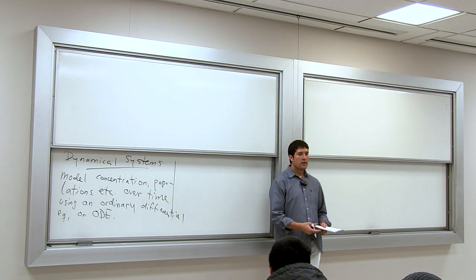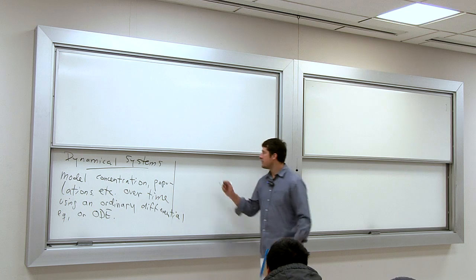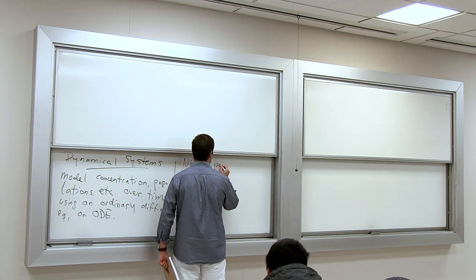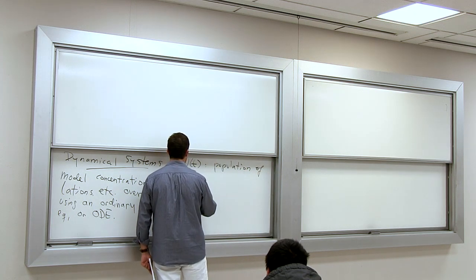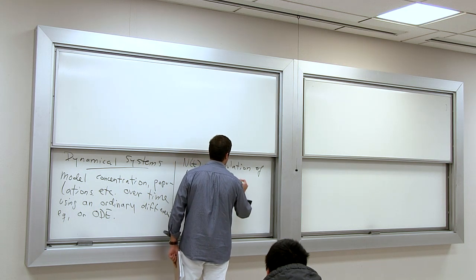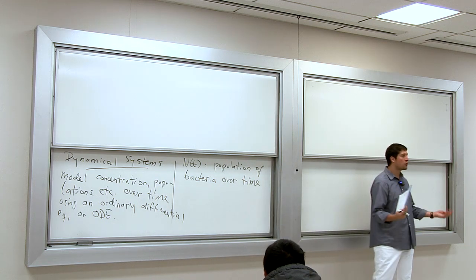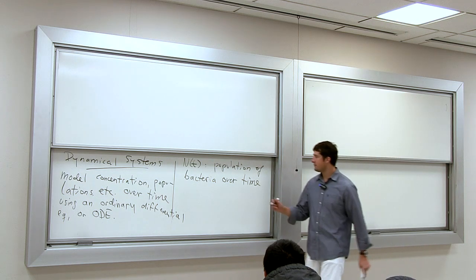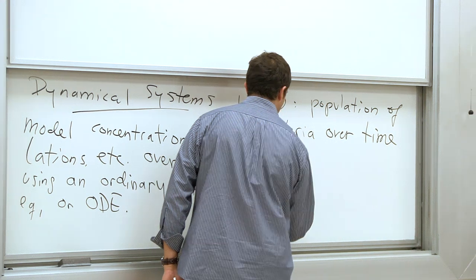The most simple ODE I can think of is the model of population growth. Suppose that N(T) is the population of bacteria over time. You grab a bottle of sugar, put a bunch of bacteria in it, and let the whole thing evolve over time.